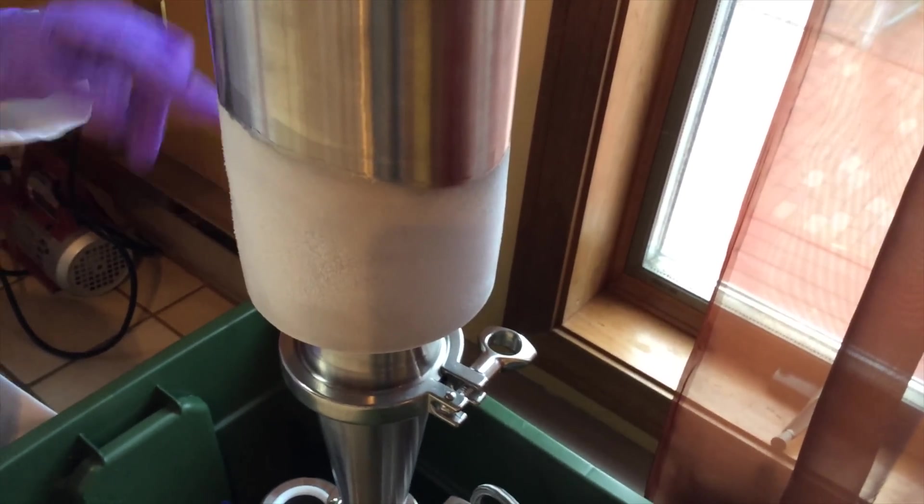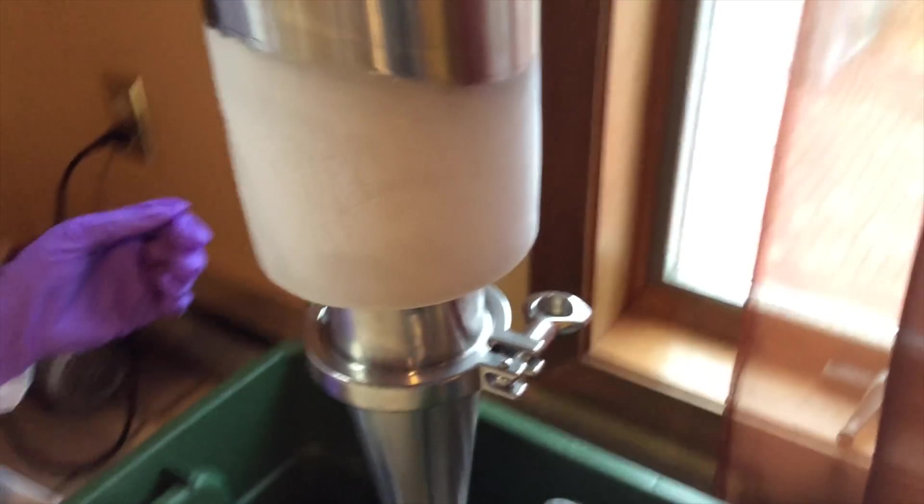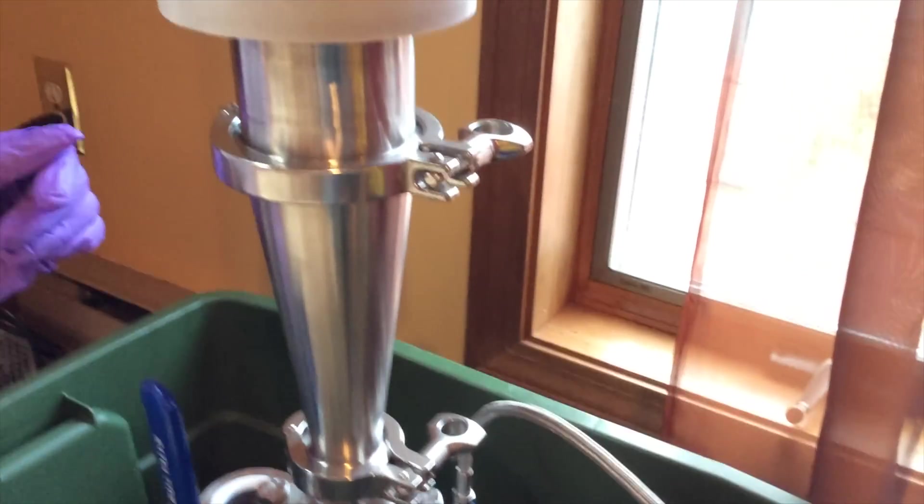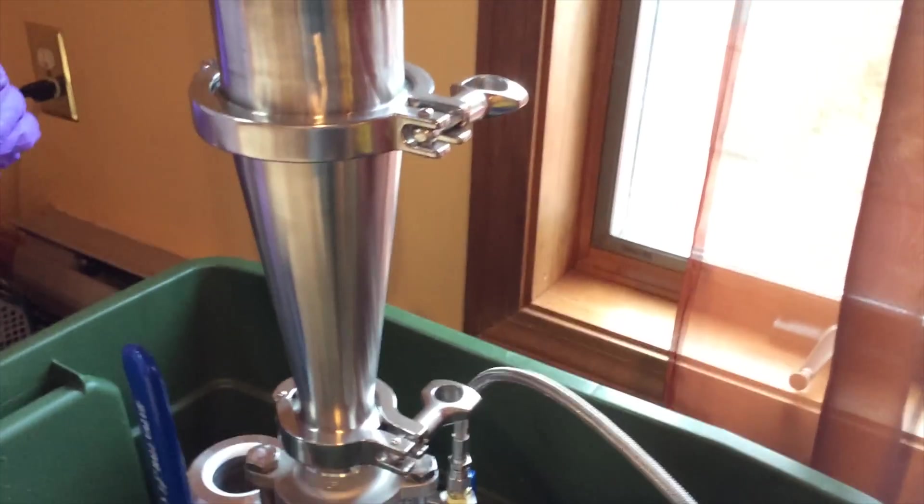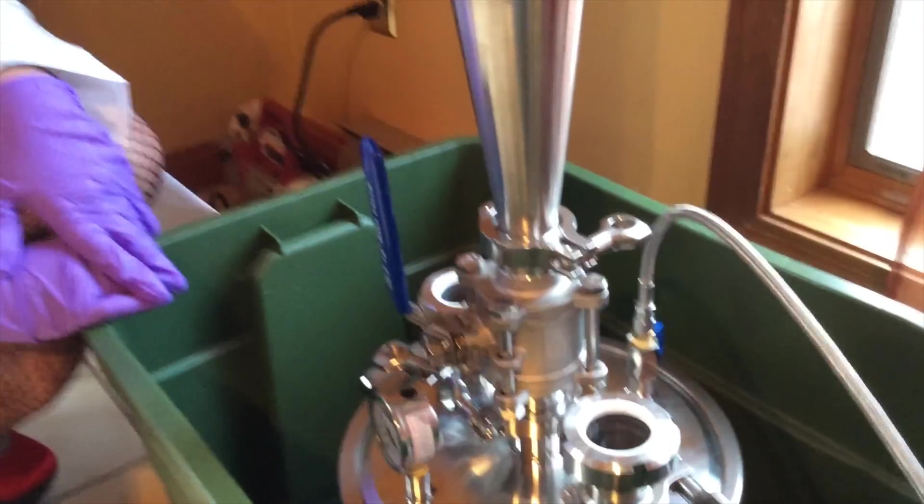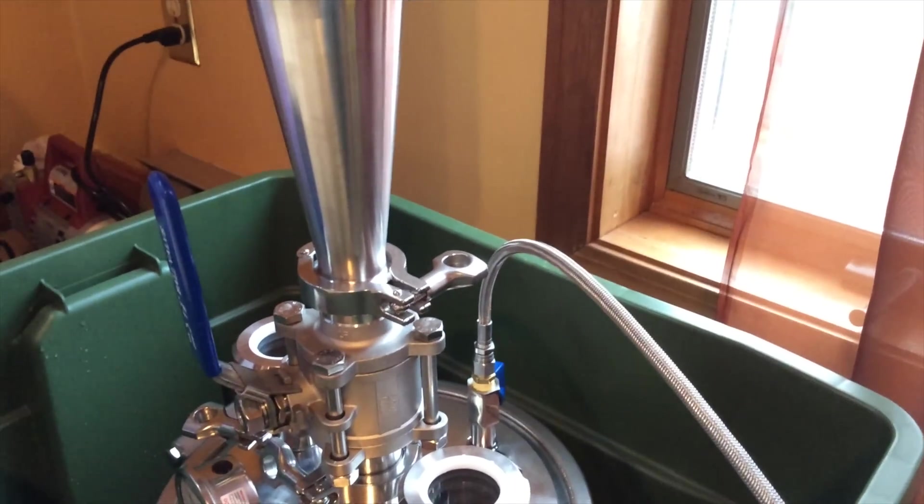Right below that you can see this little cylinder reducer-type deal. That's where all your filtration takes place. There's multiple layers of filters in there, as well as coffee filters.